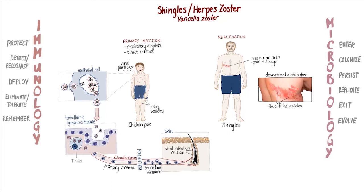Noah remembers his mother making sure that the boys' nails were cut short and that their hands were cleaned often. At night, they were made to sleep with socks over their hands to prevent them from scratching the vesicles. One of the most common complications of chicken pox is bacterial superinfection — additional infection of the skin lesions with a bacteria like group A strep or staph aureus, introduced through scratching of the infected areas.